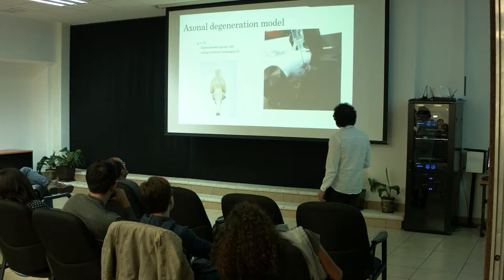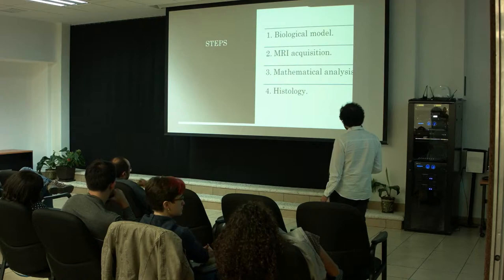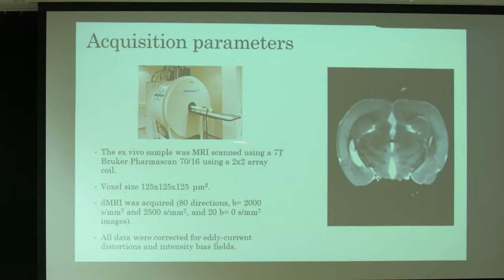These are the steps: we have a biological model, then we make the MRI acquisition, then the mathematical analysis, and after that the histology to have the biological background of that region. For the acquisition parameters, we used a 7-Tesla Bruker PharmaScan. This is an ex vivo acquisition. The voxel size is 125 micrometers isometric, and we used two shells of 80 directions — one at b=2,000 and the other at b=2,500 — plus 20 b-zero images.